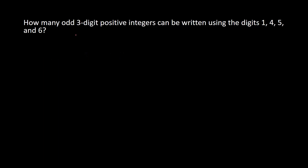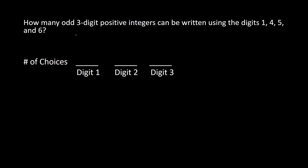Here's another example using three-digit integers that are also odd, but we can only use the digits 1, 4, 5, and 6. We have three digit positions, and we need to figure out how many options we have for each. There's no specification on the size of the number — the only criteria are that it's odd and we're limited to the digits 1, 4, 5, and 6.